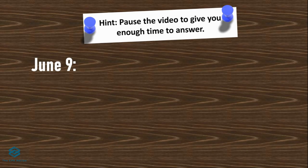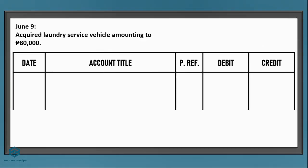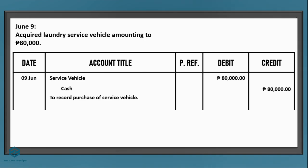Also on June 9, we acquired a laundry service vehicle amounting to 80,000 pesos. This one is pretty straightforward. Let's put the date. We debit service vehicle. Since we paid cash, we credit cash. Don't forget the explanation. There's no need to compute for anything — just put the given cost of 80,000 under the debit and credit columns. This should be easy to get right.